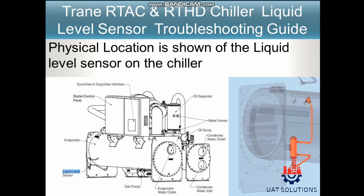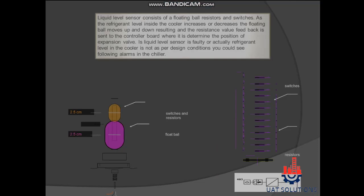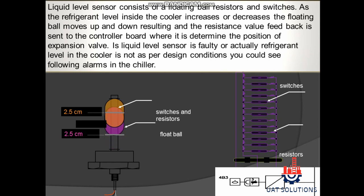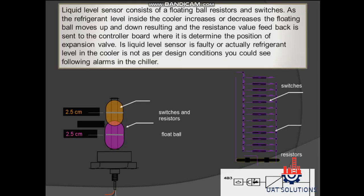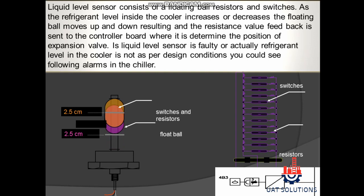The physical location of the liquid level sensor on the chiller is shown. The liquid level sensor consists of a floating ball, resistors, and switches. As the refrigerant level inside the cooler increases or decreases, the floating ball moves up and down, and the resulting resistance value feedback is sent to the controller board, where it determines the position of the expansion valve. If the liquid level sensor is faulty, or the actual refrigerant level in the cooler is not as per design conditions, you could see the following alarms in the chiller.